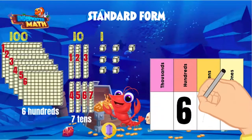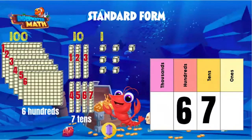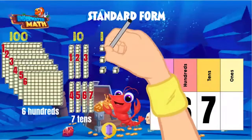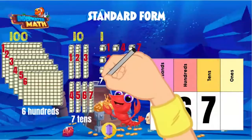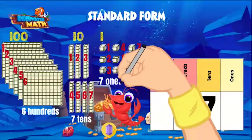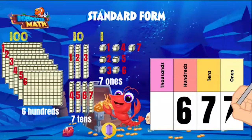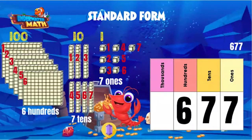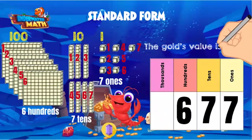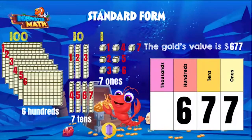Now for the ones: one, two, three, four, five, six, seven — seven ones. So this is our number in standard form: 677. With the added gemstone, the gold's value is now six hundred and seventy-seven dollars.